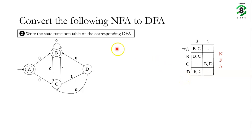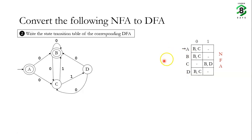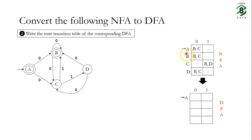In the next step we are going to derive the state transition table of the equivalent DFA, starting from the NFA's table. We start from the same initial state A, because the initial states of the NFA and the DFA are the same.